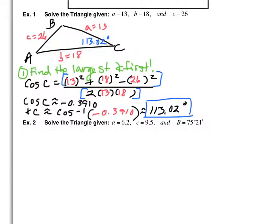Now we still have two missing angles, so we need to find another. At this point, since we have a side across from an angle, we could convert to Law of Sines — however, I highly caution you against it. In this particular problem it won't make a difference, but in other problems you can be off by a few degrees. My suggestion: if you start with Law of Cosines, stay with Law of Cosines.